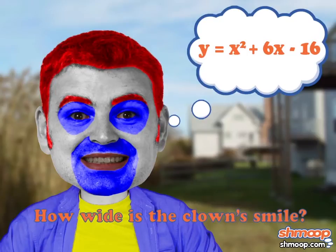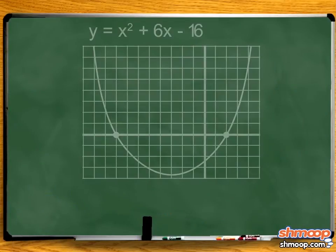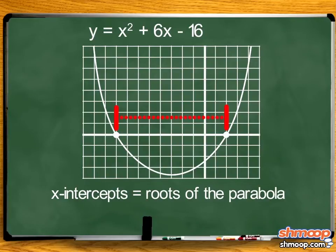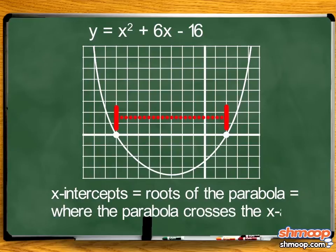This looks like a quadratic equation. Let's take a look at the equation on a graph. To find the width of the clown's smile in inches, we can calculate the distance between the x-intercepts or roots of the parabola. The x-intercepts are where the parabola crosses the x-axis, which means y equals zero.